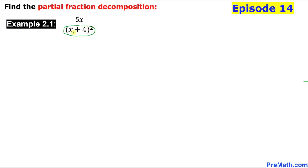As we can see, we have the power 2, which means this linear factor is repeating itself twice. That means we are going to have two fractions. Since it repeats twice, we put the first denominator as x plus four, and then we increase the power by one, so the second becomes x plus four squared.